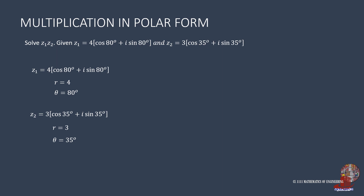We only need to multiply the moduli — that is 4 times 3, giving 12. We also need to add the arguments, 80 and 35, resulting in 115 degrees. After which, place them into the polar form of the resultant complex number, which is 12 times cosine of 115 degrees plus i sine of 115 degrees.